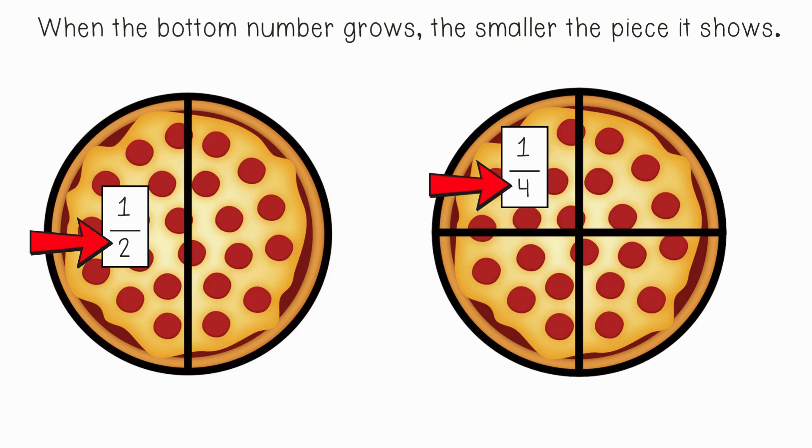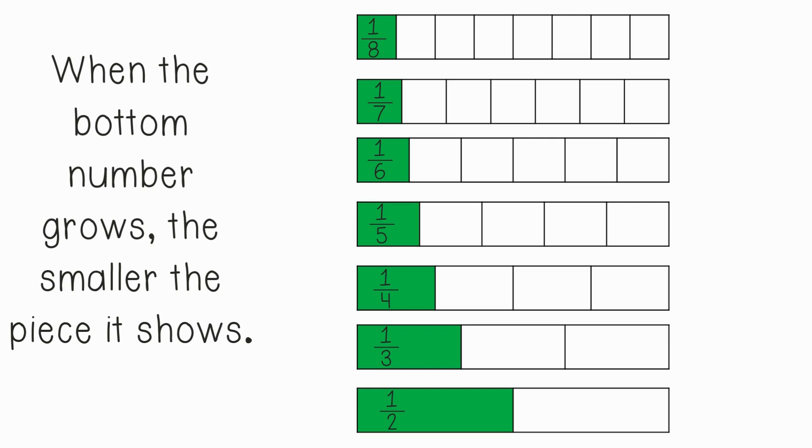Here are fraction bars where the numerator shows one on each of them. Do you see how the pieces get smaller as the denominator gets bigger? That's because we're breaking the whole into more pieces. The more pieces we break it into, the smaller the pieces get.